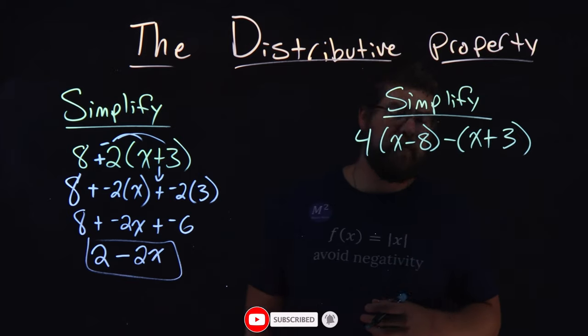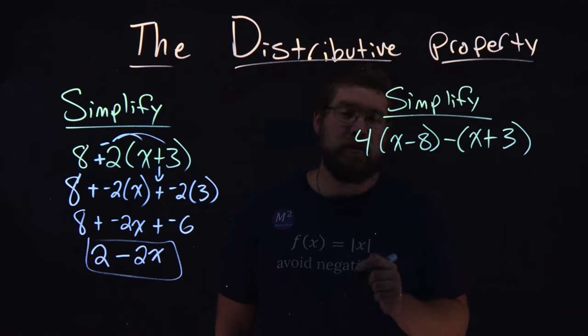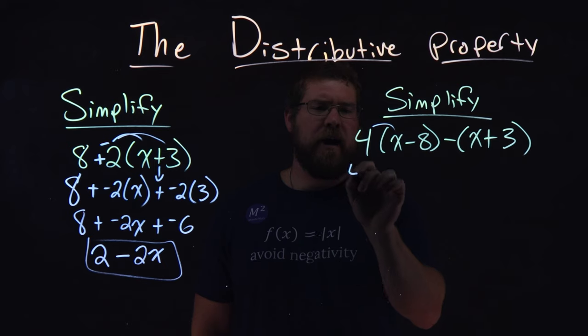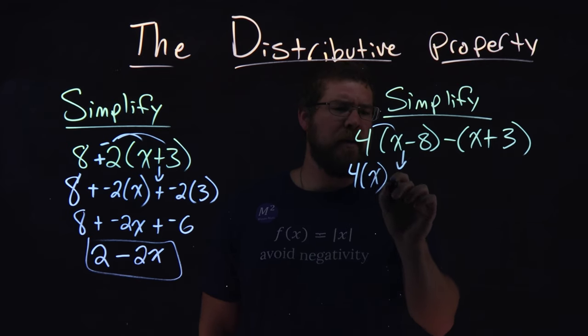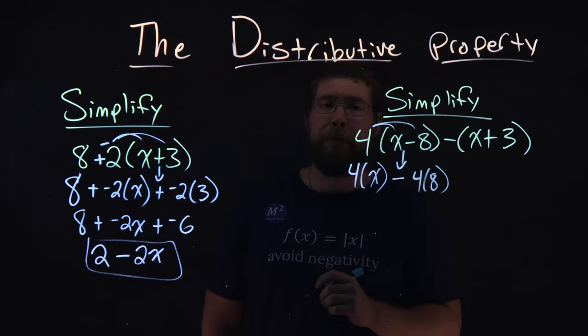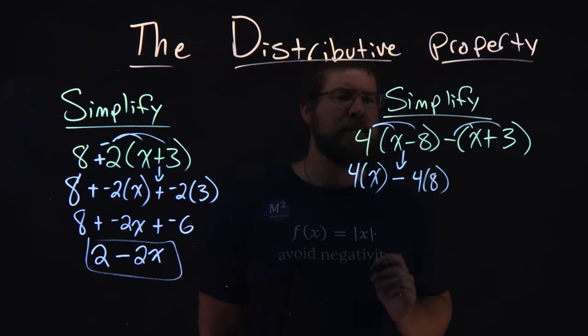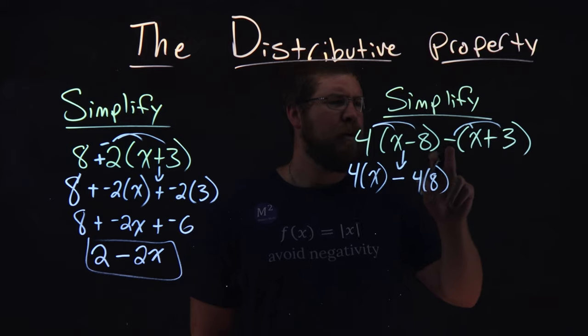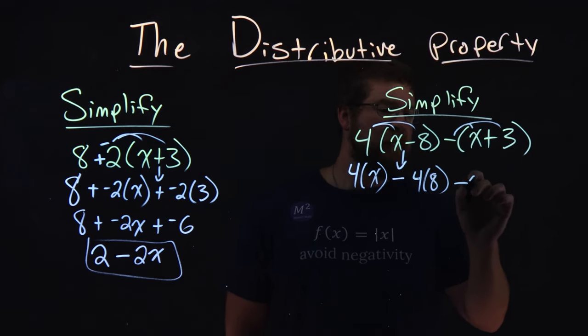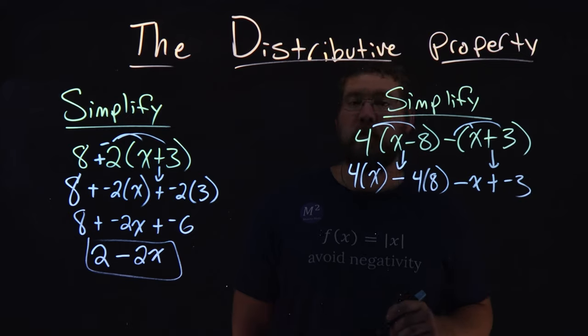Now the second example is a little more difficult. We have two sets of parentheses, so I'm going to apply the distributive property twice. We'll start with the first one. 4 times x, bring down the minus sign, then 4 times 8. This minus sign becomes tricky. We're going to distribute this minus sign a different way. Minus times x is minus x, plus sign in between, and minus times 3 is negative 3.